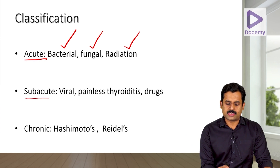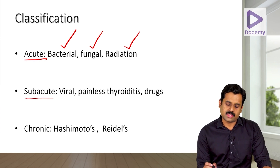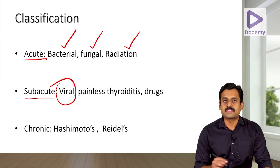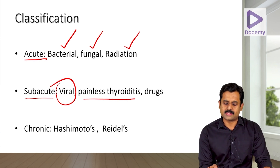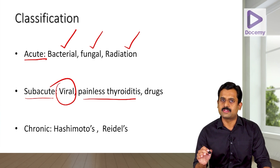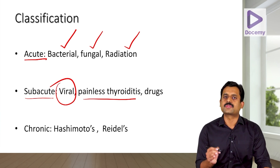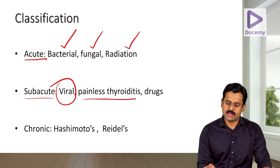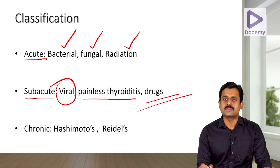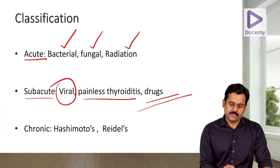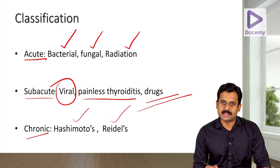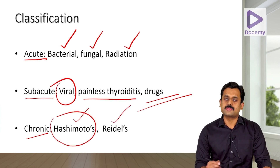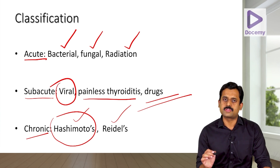Under subacute causes, the most common is viral thyroiditis, otherwise called de Quervain's thyroiditis. Other subacute causes include painless thyroiditis — usually seen in postpartum females, called postpartum thyroiditis — and certain drugs. For chronic thyroiditis, the two common causes are Hashimoto's thyroiditis and Riedel's thyroiditis.